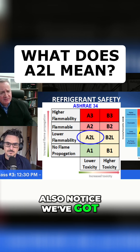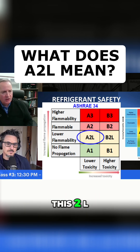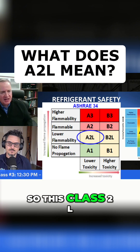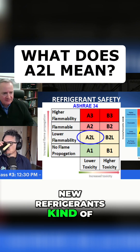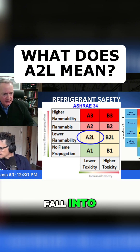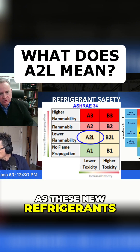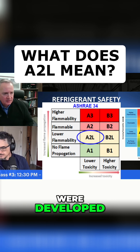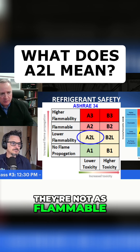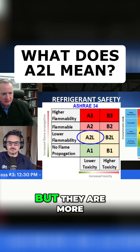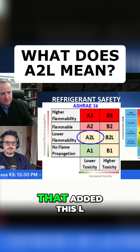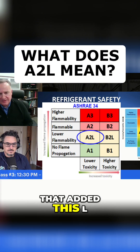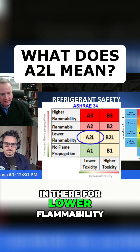You'll also notice there's a 2L class. That's what these new refrigerants fall into. As these new refrigerants were developed, it was realized they're not as flammable as a 2, but they are more flammable than a 1. So they came up with this new category and added the L for lower flammable.